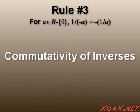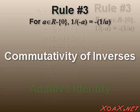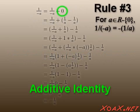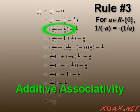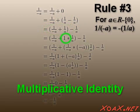The third rule is called commutativity of inverses, since it involves interchanging the order of the multiplicative and additive inverses. First, we use additive identity. Next, we use additive inverses. Then we use the associative property. Then the multiplicative identity.